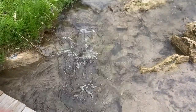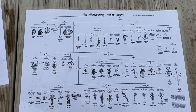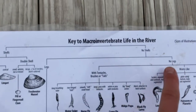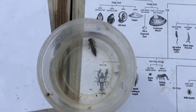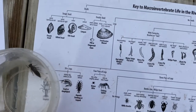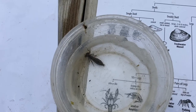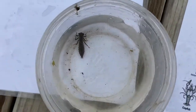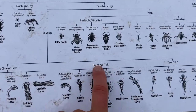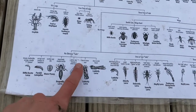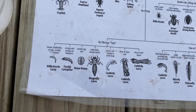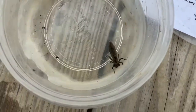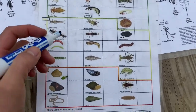Let's try the key on this guy. We start at the very top: shell or no shell? This guy has no shell. Does he have legs? Yes. Ten or more legs, four pairs, or three pairs? Three pairs. Wings or no wings? No wings. One, two, or three tails? No obvious tails. Looking at the pictures — I think it matches the one that says dragonfly: large body, hinged mouth. I'm going to tally off dragonflies — he's in group one.